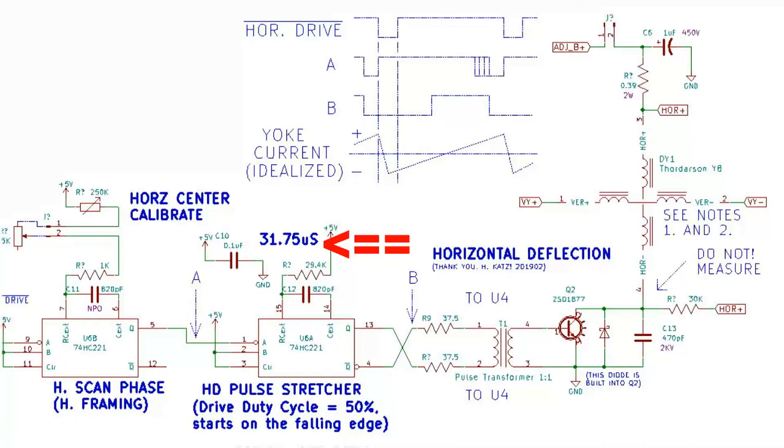It's half of 63 and a half microseconds. The monostable multivibrator switches the base of the transistor off and on. The collector of the transistor, when the transistor is switched on, pulls current down through the deflection coil from the adjustable B+ input.